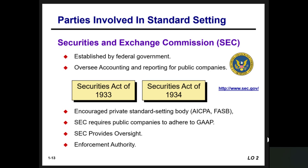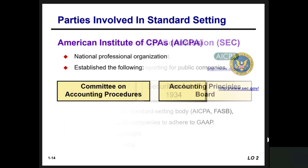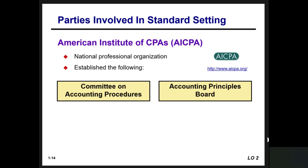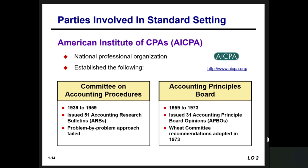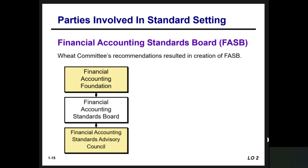The SEC was established after the economic crash of the Depression to standardize financial reporting and regulate public companies. The American Institute of Certified Public Accountants is a national professional organization that established the Committee on Accounting Procedures (1939–1959), which issued 51 Accounting Research Bulletins (ARBs) using a problem-by-problem approach that ultimately failed. The Accounting Principles Board followed from 1959 to 1973, issuing Accounting Principles Board opinions (APBOs), until the Wheat Committee's recommendation was adopted in 1973 to establish a new set of boards.